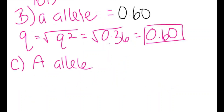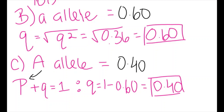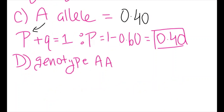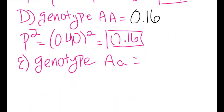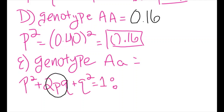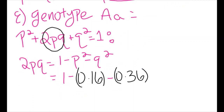In part C, we are asked to find the frequency of the dominant allele. Since P represents the dominant allele, we can use the equation P plus Q equals 1. Subtracting 0.60 from 1, we get the dominant allele frequency as 0.40. In part D, we are asked to find the frequency of the homozygous dominant genotype. Since P squared represents the homozygous dominant genotype, we can square 0.40 to get 0.16. Finally, we are asked to find the frequency of the heterozygous genotype. Using our equation P squared plus 2PQ plus Q squared equals 1, we can plug in the values we know and solve for 2PQ: 1 minus 0.16 minus 0.36, which equals 0.48.